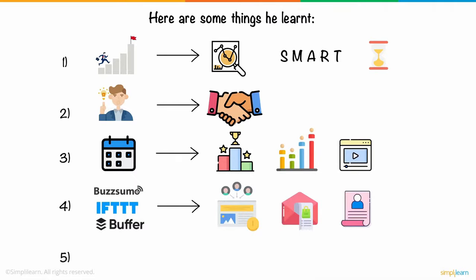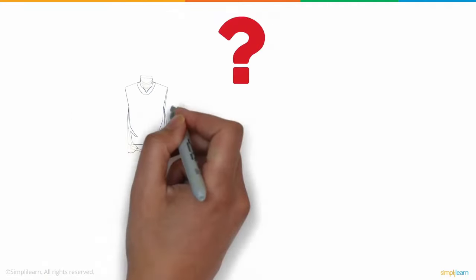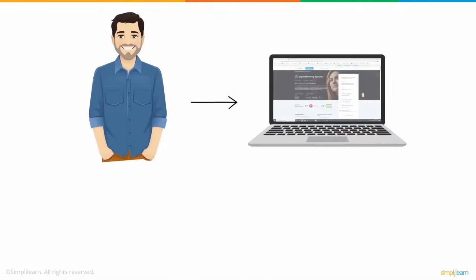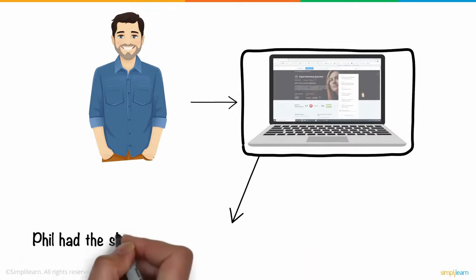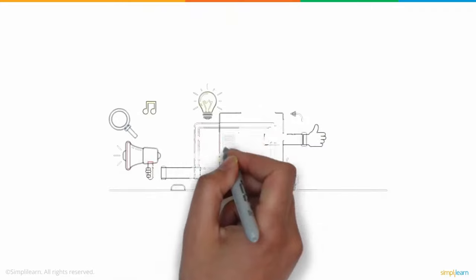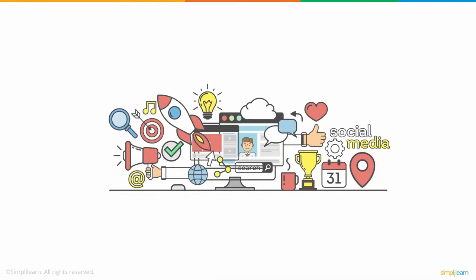Phil also learned to perform visual storytelling with images and videos. Phil had taken up Simply Learn's digital marketing course, and it was thanks to this course that he had the skills and training to get good at social media marketing. Now you can too, by clicking on the top right corner. With that, we've given you an introduction to all the major concepts of social media marketing.